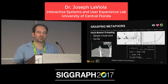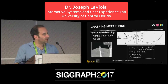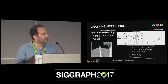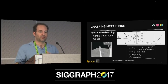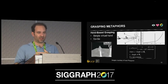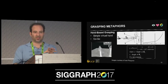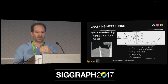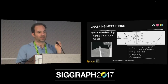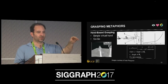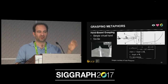It's called the go-go interaction technique, which is inspired by Inspector Gadget. Within a certain distance from my body to some distance D, I can do simple manipulation. But then when I surpass that, my hand exponentially goes farther out into the environment to be able to select anything in the room.